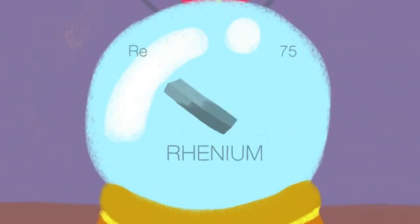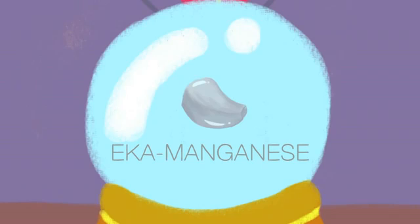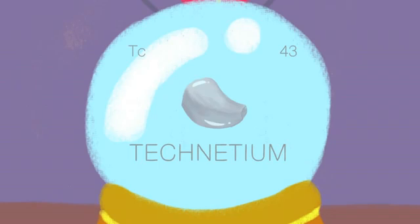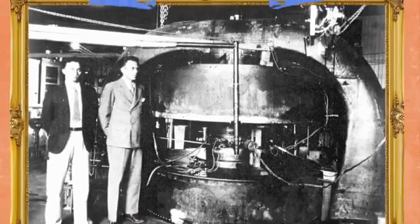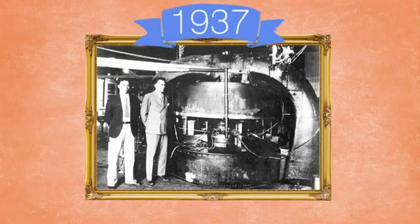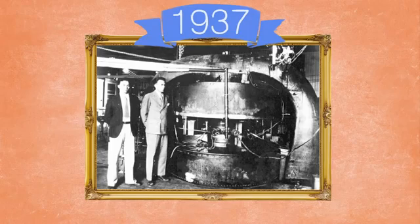Scandium, germanium, rhenium. The element he called eka-manganese is now called technetium. Technetium is so rare it couldn't be isolated until it was synthesized in a cyclotron in 1937, almost 70 years after Dimitri predicted its existence, 30 years after he died.